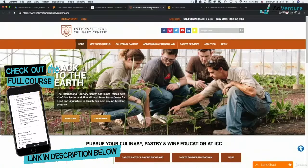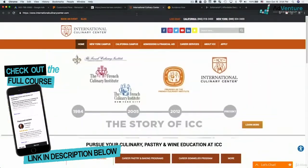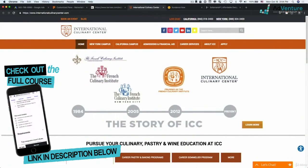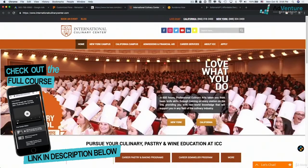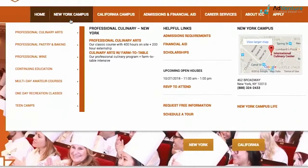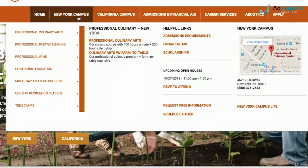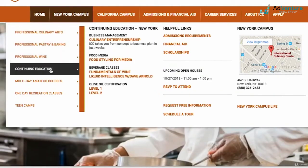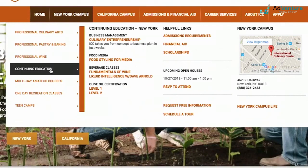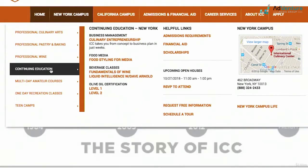Let's take briefly another look at another client, the International Culinary Center. A client of ours, a really fun, incredible client, really dynamic campaigns, exciting stuff, challenging account. We see here right away I get some ideas for how I would structure out a Google Ads account. They have a New York campus, a California campus, and so many different things. They have professional culinary arts, professional pastry and baking, professional wine, continuing education, all different sorts of classes and courses that they offer. Under continuing education, they have culinary entrepreneurship, food styling for media. There's tons of programs.